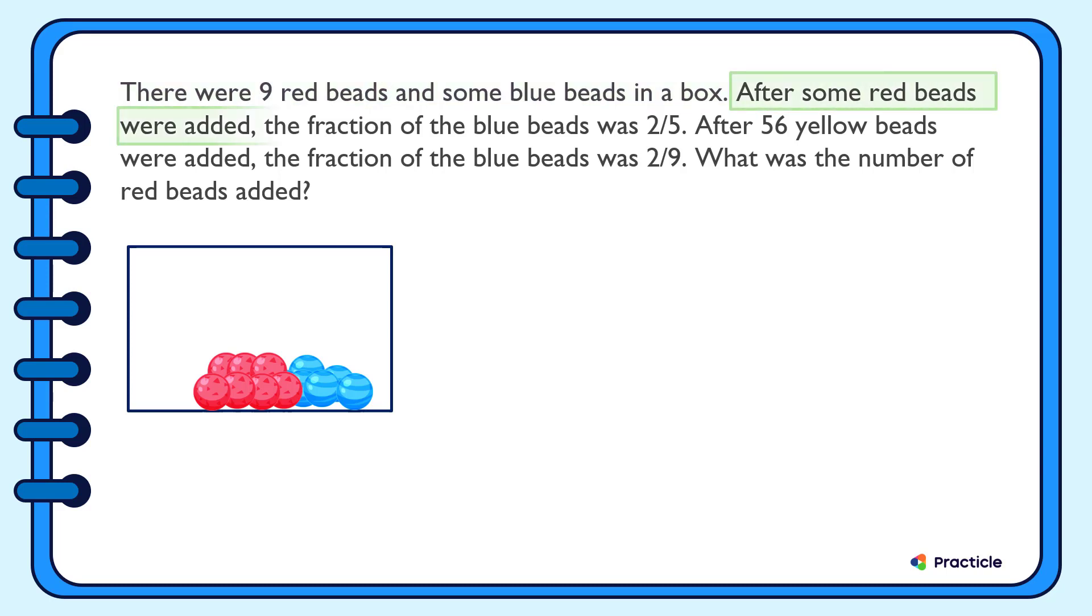After some red beads were added, the fraction of the blue beads was two-fifths. Here, we have two very important clues. First, we know that some red beads were added, right? So this means that the number of red beads that we have at the start must have changed. And then we know the fraction of the blue beads after that. What does this two-fifths mean? This means that out of every five beads, two of them were blue. Let's draw the model for that.